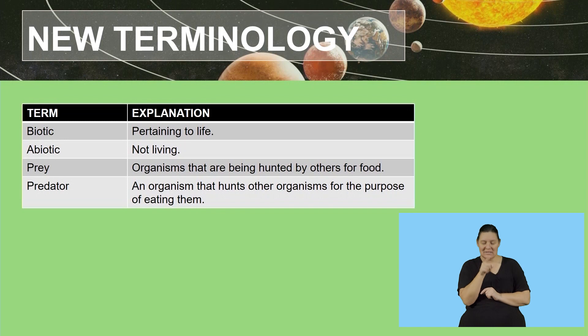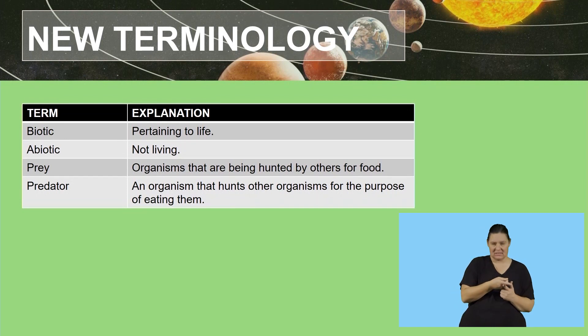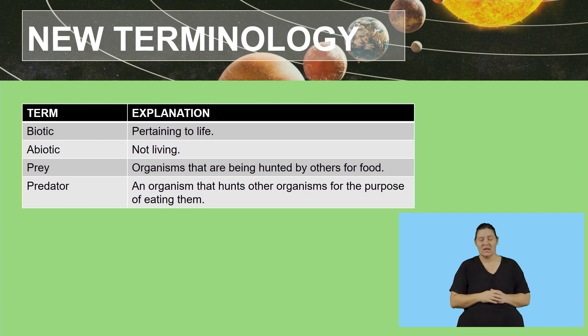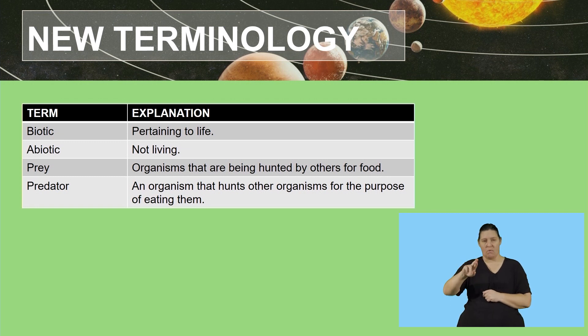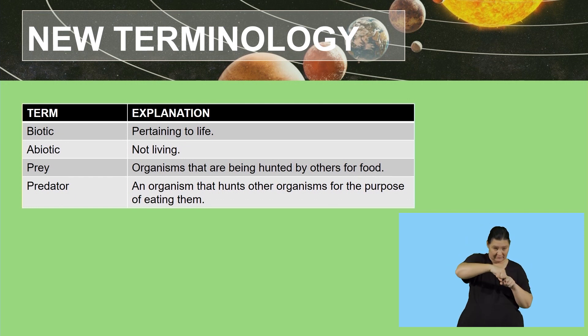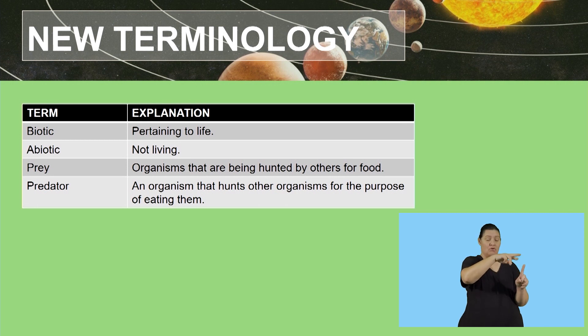The third term is prey — spelled P-R-E-Y, not the one we use at church. These are organisms that are being hunted by other organisms for food — other organisms are hunting them for nutrition. And then the last term is predator — an organism that hunts other organisms for the purpose of eating them. A prey is hunted by the predator. Those are the terms we are going to come across during this lesson.